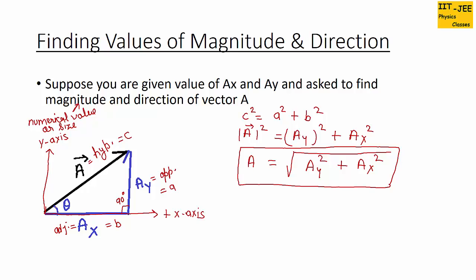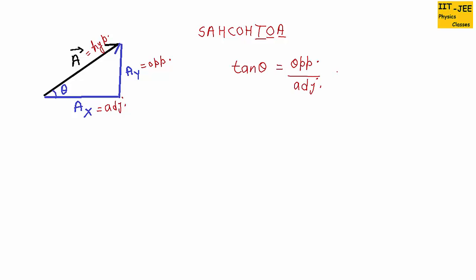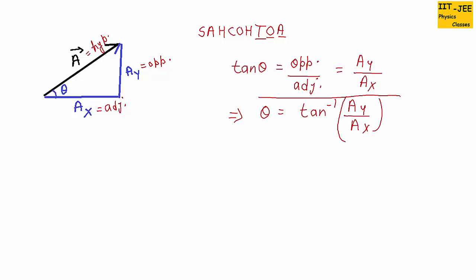Now we have to find the direction — that means we have to find this angle theta. For that we need to use tan. Remember: this is the opposite side, this one is the adjacent side, and this is the hypotenuse. We know tan equals opposite over adjacent, so tan θ = ay / ax, which gives us θ = tan⁻¹(ay / ax). We can use this formula to find the direction of vector a.